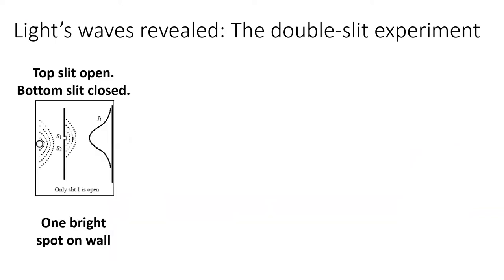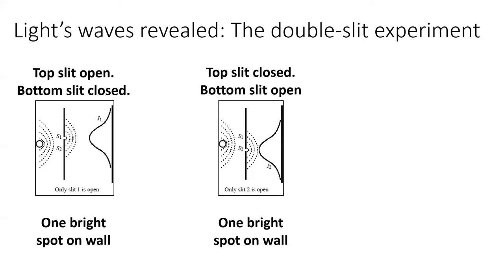If we close one slit and let light shine through the other one, we'd get the result you probably expect. One spot shows up on the wall, and that spot is brightest the closer you get to the slit. If we close the original slit and open the other slit, we see the exact same thing.